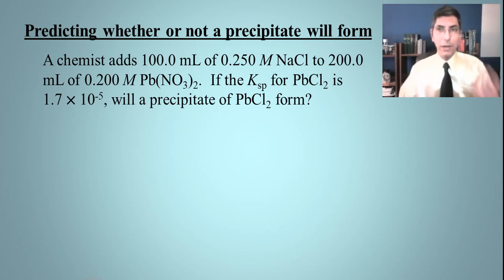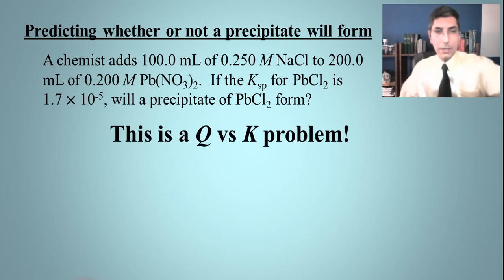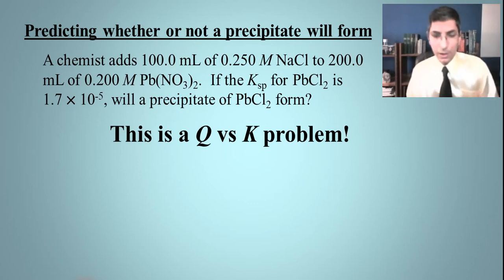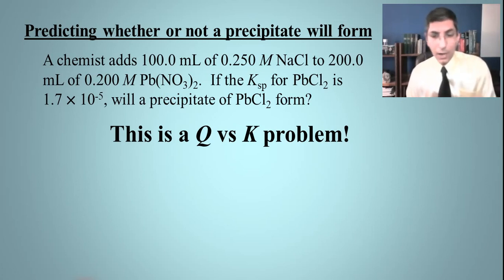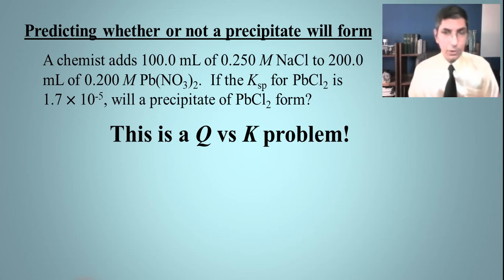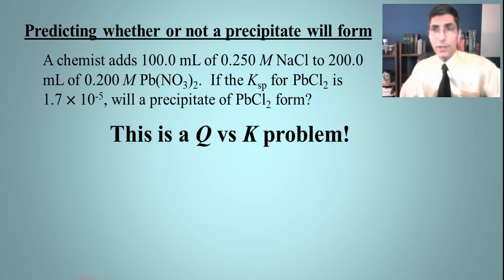Let's think about our strategy. The main idea here is that this is a Q versus K problem. If you don't know what I'm talking about, you might want to go back to lesson 18, where we learned about applications of equilibrium and the basic idea behind Q versus K. If Q is greater than K, it's going to go to the left. If Q is less than K, it's going to go to the right. This is an application of that in terms of solution chemistry.